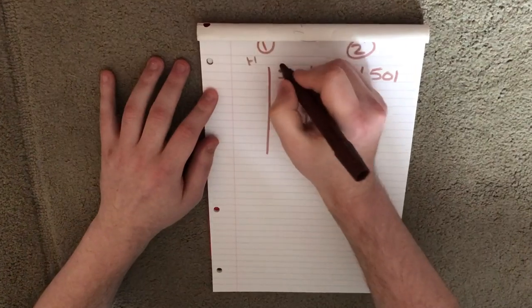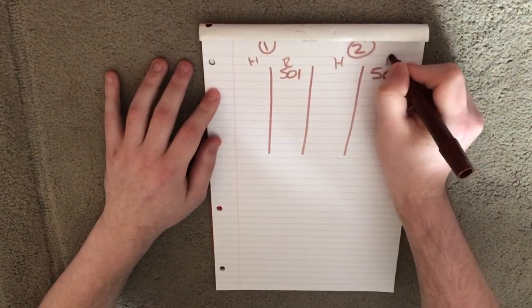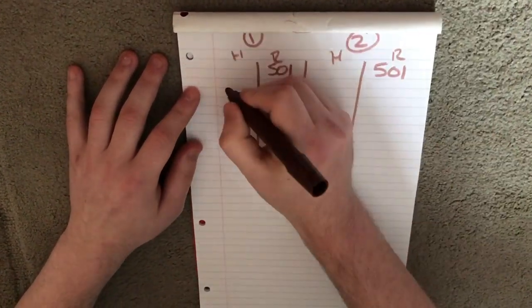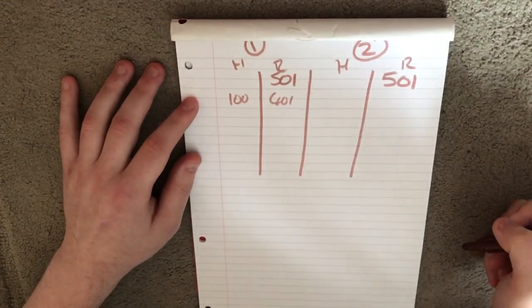So we've got hit score, required score, hit score, required score. So it's left to right, left to right. So we write our scores in here and take them off as we go.